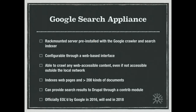It has a web-accessible GUI for configuration. Their documentation says it can index over 200 different kinds of documents, and there's an existing contrib module for integrating it with Drupal. Google has officially end-of-lifed the Google Search Appliance and told all customers that as of next year those boxes need to go back to the mothership. That's why our client asked us to help them build a replacement.